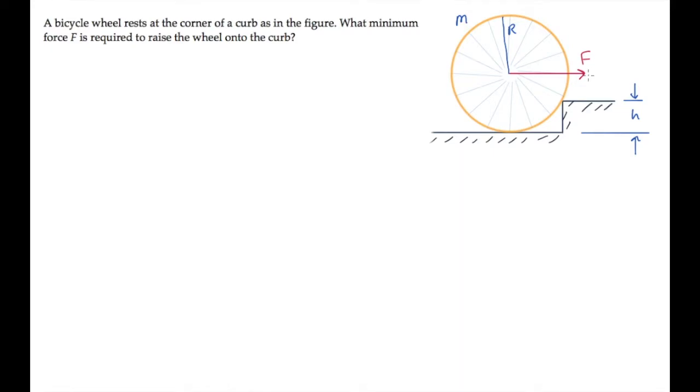The bicycle wheel in this problem is at rest at the corner of a curb, and we're asked to find the minimum horizontal force F required to lift it up onto the curb.